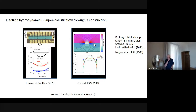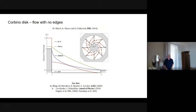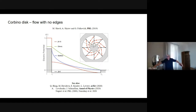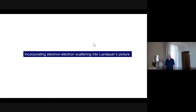Another theoretical development: Falkovich and his student Michal Shavit looked at the Corbino disc — just an annulus — and saw that in a Corbino geometry you can basically eliminate the resistance in the bulk of the system using electron-electron scattering. Not the contact resistance, but the bulk resistance can be eliminated. We'll come back to this very soon.